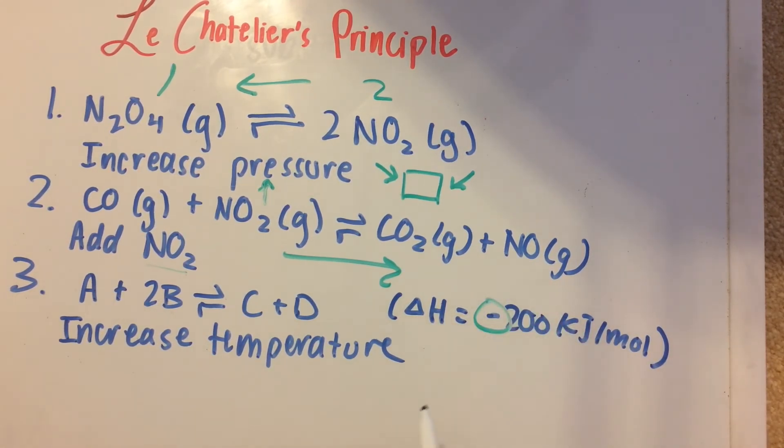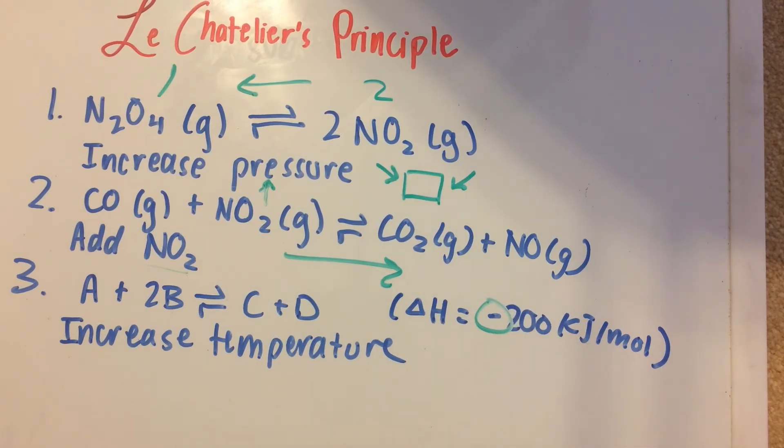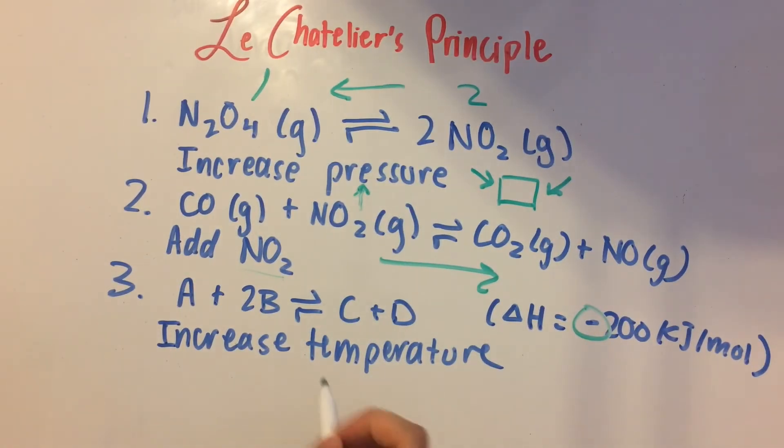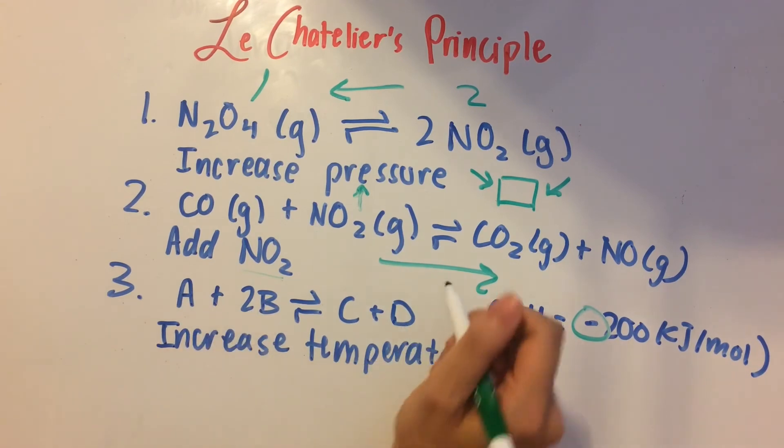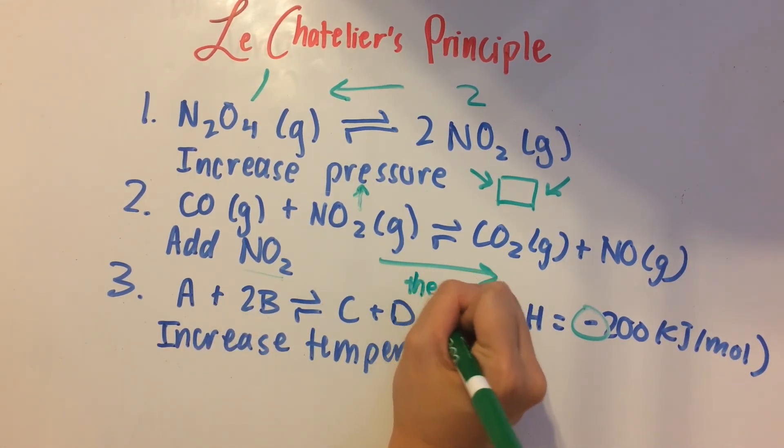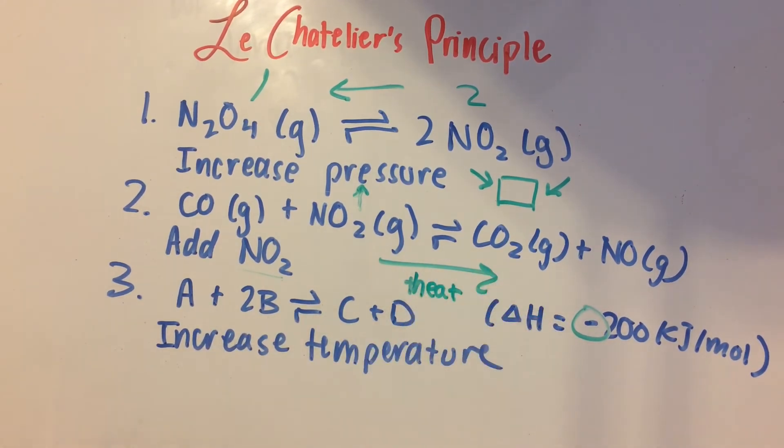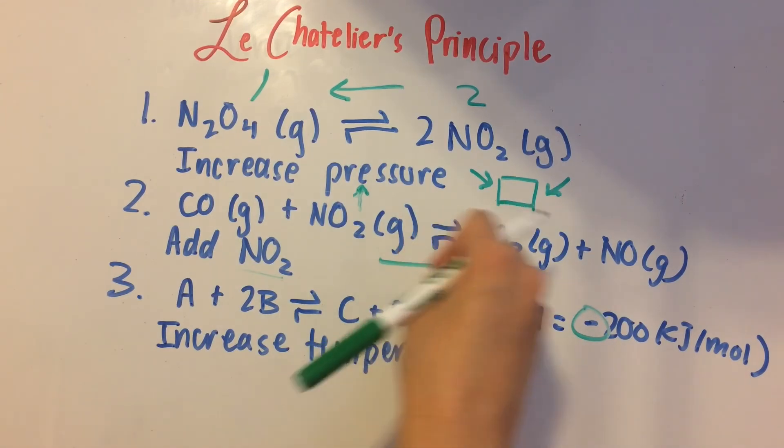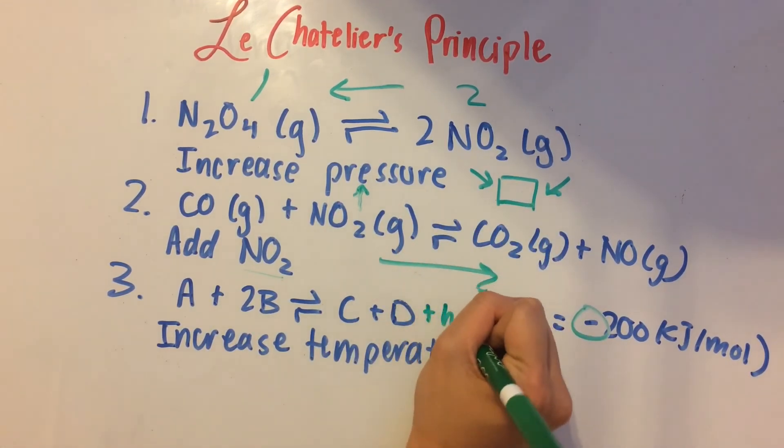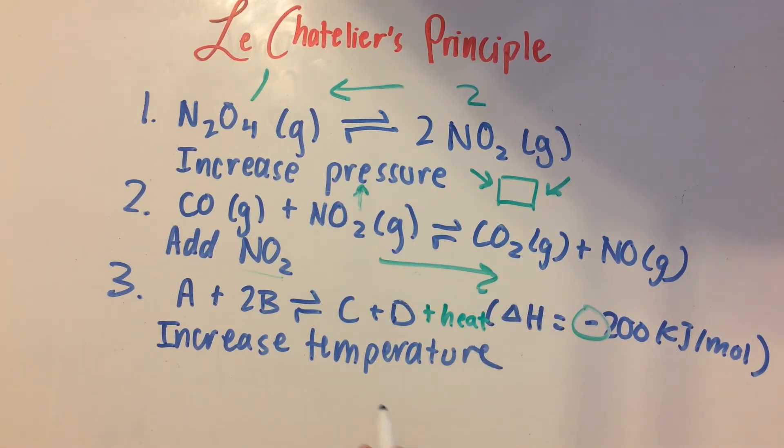Because delta H is negative, meaning that it's going to release energy. And that means when a reaction releases energy, it's exothermic. So when it's exothermic, heat is going to be released as a product.